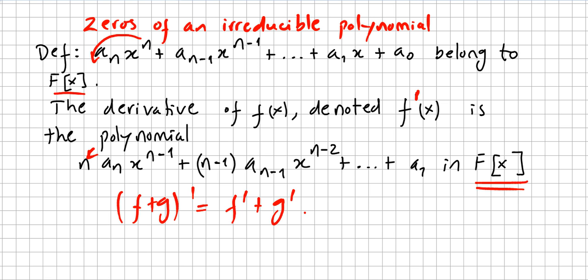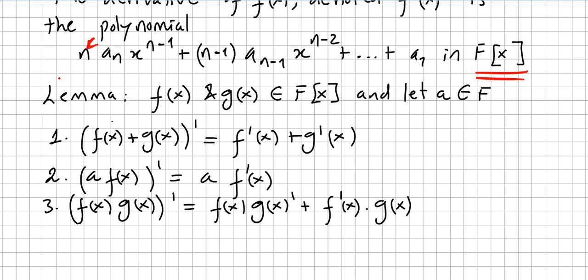Lemma: Let f(x) and g(x) be in the ring of polynomials F[x], and let a be in the field F. The derivative of the addition is the addition of both derivatives. a times f(x) derivative is a times f'(x). The derivative of the product is the usual product rule: the derivative of one times the other plus the derivative of the other times the first one.